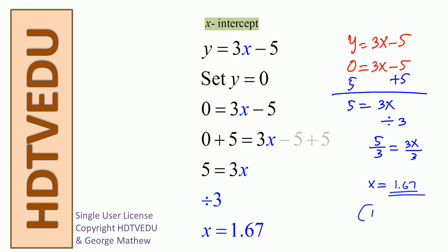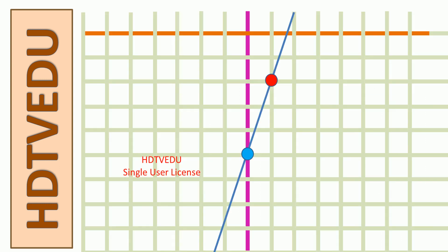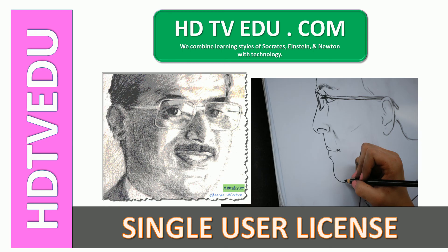So our x-intercept point is (1.67, 0) — remember, x comes first. Go back to the line, extend it, and you will see that this point is 1.67, 0 — that is where the graph touches the x-axis. Our two plotted points were (0, negative 5) and (1, negative 2). This is George Matthew signing off — good luck.